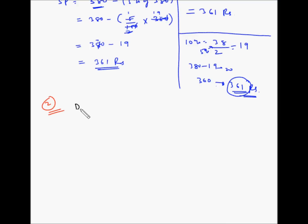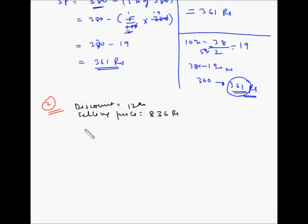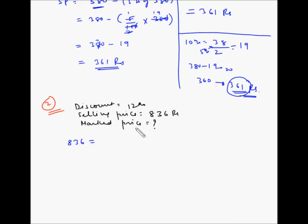Let's take another example. Say we know the discount is 12% and we know the selling price is 836 rupees, and we have to find what the marked price is. We know that the discount is calculated on the marked price, and after deducting the discount from the marked price we get the selling price. So 836 equals the marked price X.